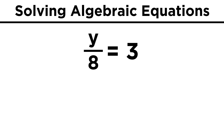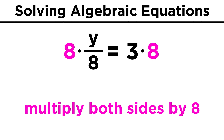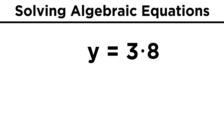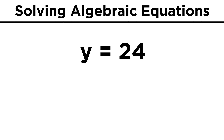And if we have y over eight equals three, we now have to multiply both sides by eight, because the inverse of division is multiplication. On the left, the eights cancel, leaving us with y, and on the right, three times eight is twenty-four, so y equals twenty-four.